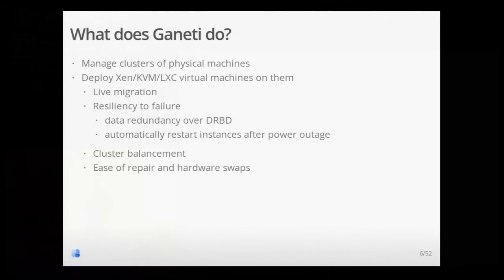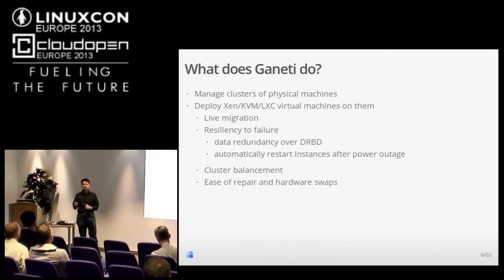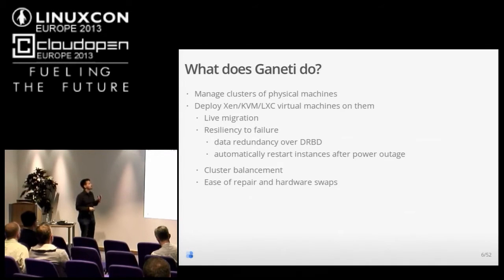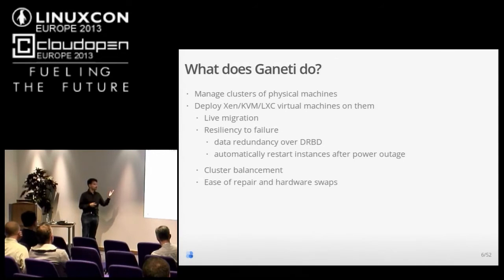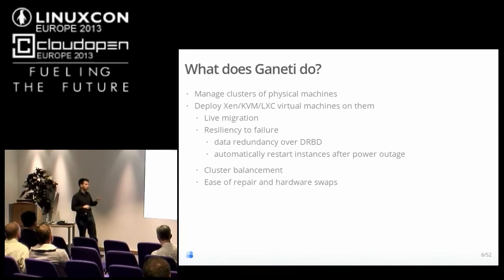What does Ganeti actually do? Ganeti manages clusters of physical machines. It deploys Xen, KVM, or LXC virtual machines on them. You just have to start from a basic Linux system with the packages of your distro installed, and Ganeti will configure them for you. It allows you to do live migrations of virtual machines between nodes of your cluster. It gives you resiliency to failure — using DRBD, for example, it can give you data redundancy, or you can have some external storage that Ganeti will make available on all your nodes.